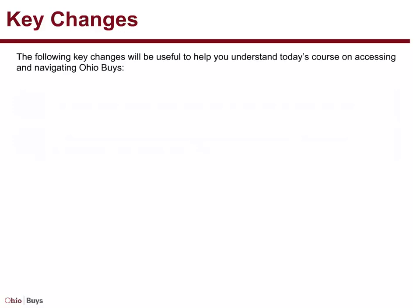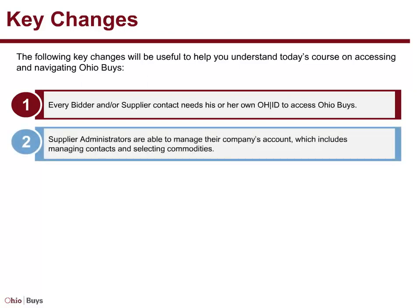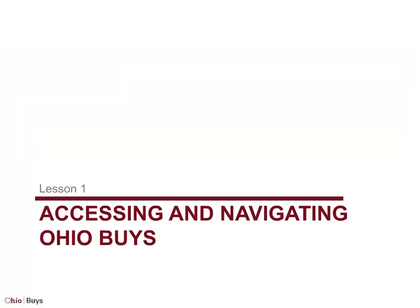The following key changes will be useful to help you understand today's course on accessing and navigating OhioBuys. Every bidder and/or supplier contact needs his or her own OHID to access OhioBuys. Supplier administrators are able to manage their company's account, which includes managing contacts and selecting commodities. Lesson 1: Accessing and Navigating OhioBuys.